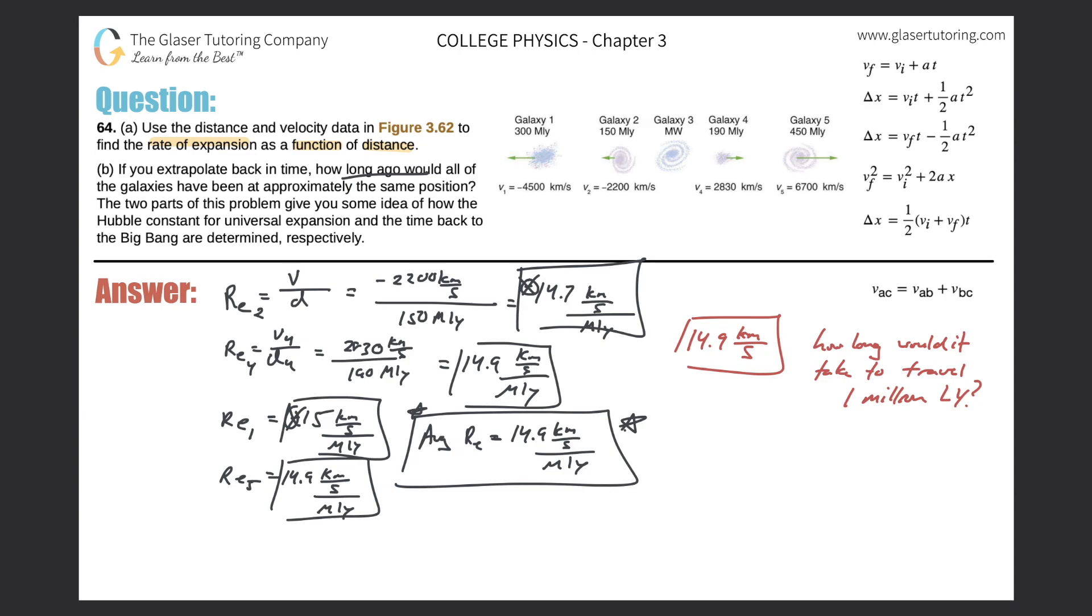How would you think to do that? It's basically just V equals D over T. If I want to solve for T, I need to know the velocity, which we do here, and I need to know the distance, which we actually do. The distance is the million light years. But in order to use this formula, you have to be consistent in your units. I have units of kilometers here, but these are units of light years. So I have to do conversion.